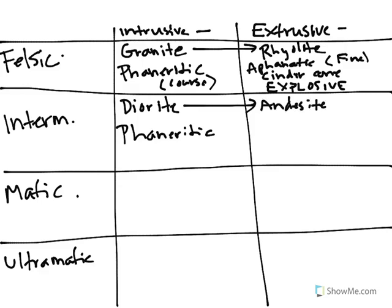And it is aphanitic. And remember, what kind of volcano does andesite come from? We said stratovolcano. And this is still a bit explosive because it has a high enough silica oxygen content.